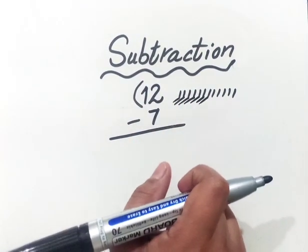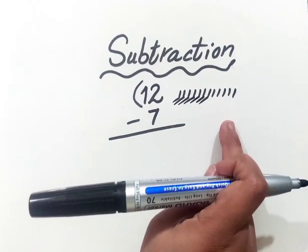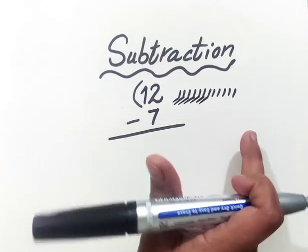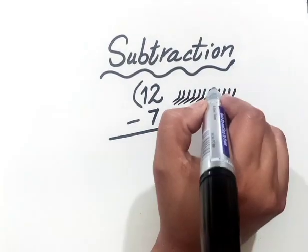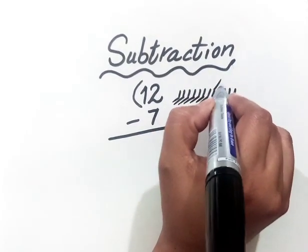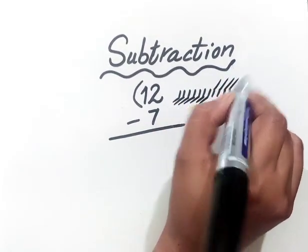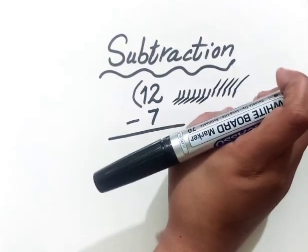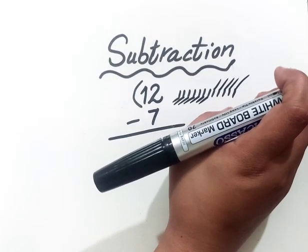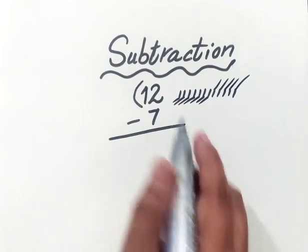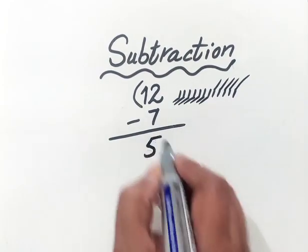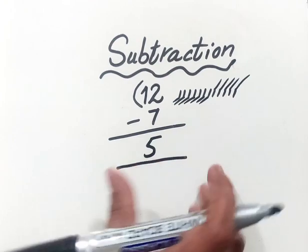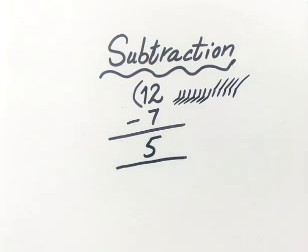Now we will count the remaining lines. How many lines are left? 1, 2, 3, 4, 5. How many are left? 5. So it means 5 is our answer.